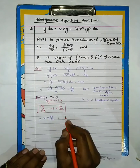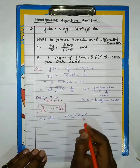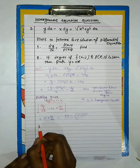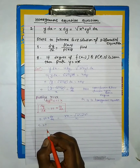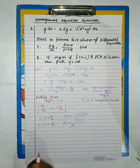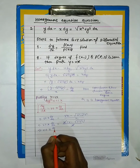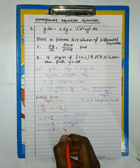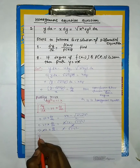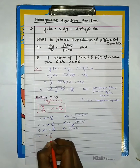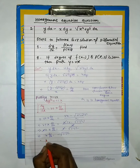Here, the degree of the upper function and the lower function is the same, so the given differential equation is homogeneous. As we know from the previous video, if the equation is homogeneous then we assume y equals vx, and differentiating with respect to x gives dy/dx equal to v plus x dv/dx.